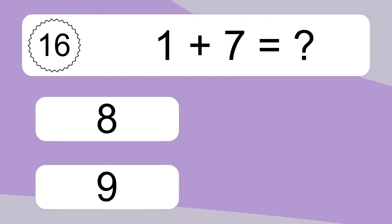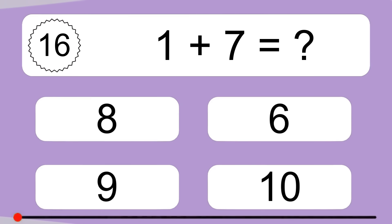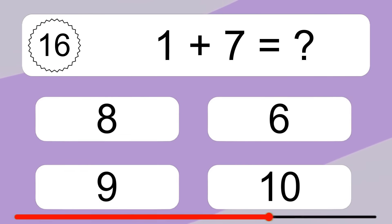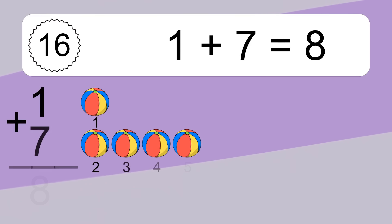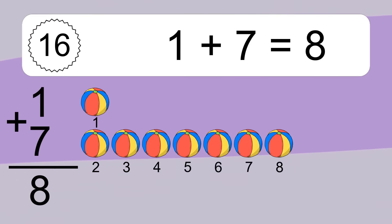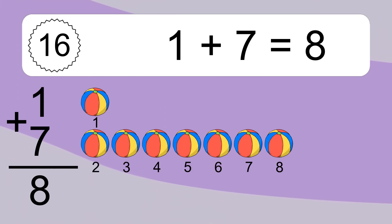1 plus 7 equals what? 1 plus 7 equals 8. Let's count it: 1, 2, 3, 4, 5, 6, 7, 8.